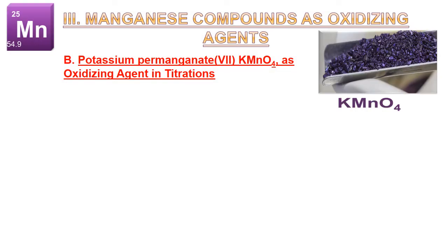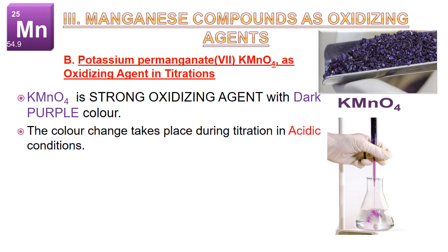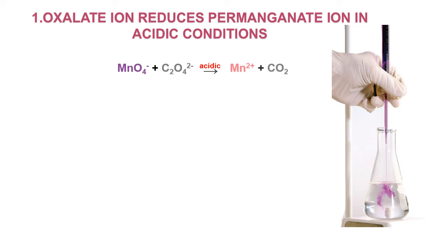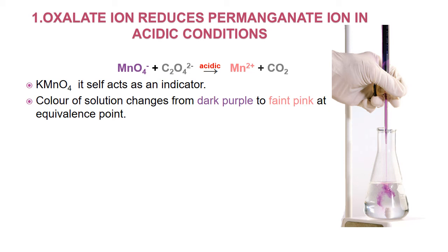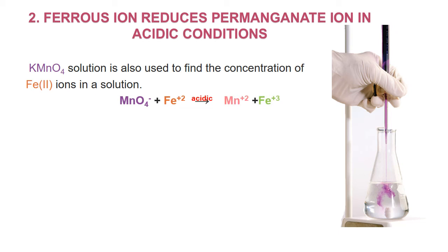Potassium permanganate as an oxidizing agent in titrations: Potassium permanganate is a strong oxidizing agent with dark purple color. Under acidic conditions, oxalate ions reduce permanganate ions to form manganese +2 ions and carbon dioxide. KMnO4 itself acts as an indicator — the color changes from dark purple to faint pink at the equivalence point, as manganese is reduced from +7 to +2. Potassium permanganate solution is also used to find the concentration of iron(II) ions; ferrous ions reduce permanganate in acidic conditions forming manganese +2 and iron +3 ions.